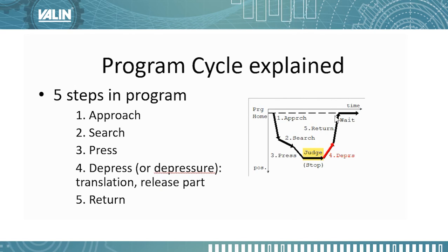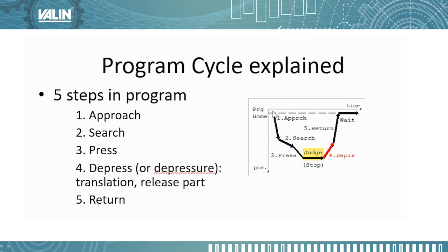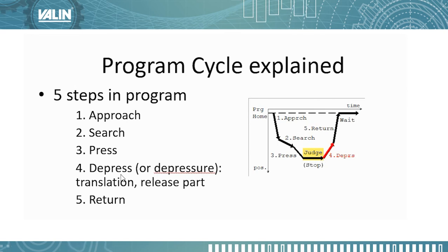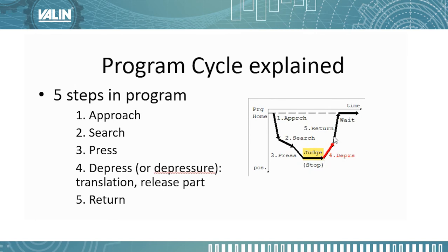IAI uses this graphic a lot to explain their program cycle, showing the approach step, the search step, the press step, then you're going to judge once you're finished pressing. That's not a numbered step — you don't really program that directly. And then the depress, the return, and then you're waiting for the next program cycle.